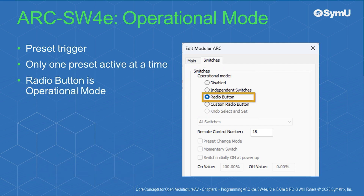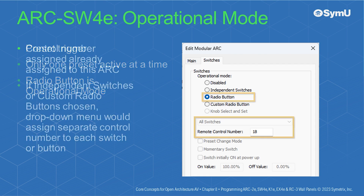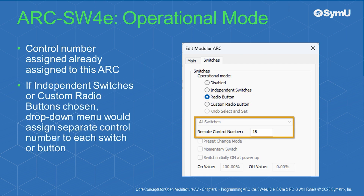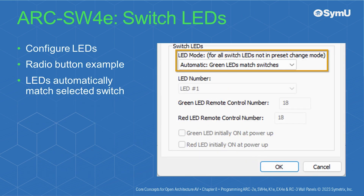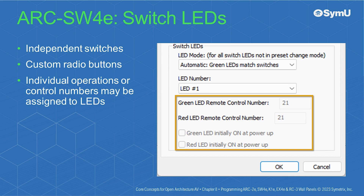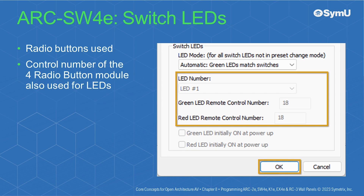The different modes are Disabled, Independent Switches, Radio Button, or Custom Radio Button. Knob Select and Set is reserved for a modular Arc using an Arc K1E and Arc EX4E. In this preset trigger example, only one preset is active at a time, so Radio Button is the selected operational mode. If independent switches or custom radio buttons are chosen, the drop-down menu assigns a separate control number to each switch. Individual switches can be set to trigger presets, act as momentary switches, or have a particular button on at power up. For the radio button example, LEDs are set to automatically match the selected switch; in independent switches or custom radio button modes, individual control numbers may be assigned to the LEDs.